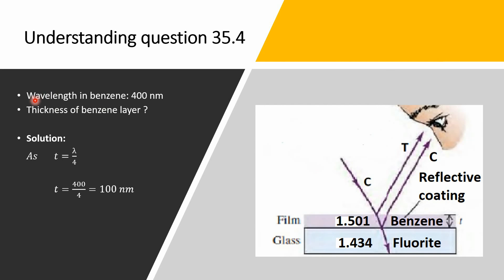In this example, the wavelength in benzene medium is given. We have to find the thickness of this thin film. We know that the thickness of the thin film is always taken as λ/4. By putting the value of lambda, we can get the value of thickness of this benzene layer as 100 nanometers.